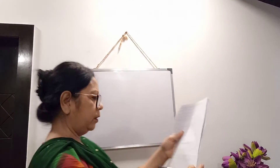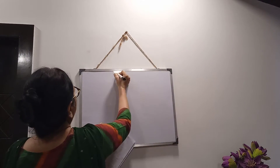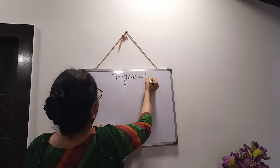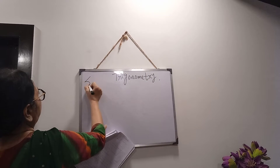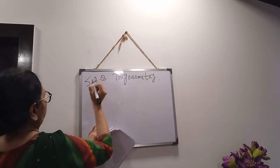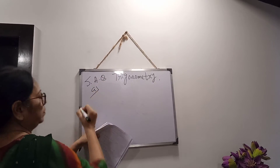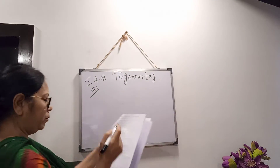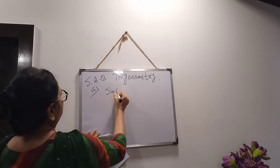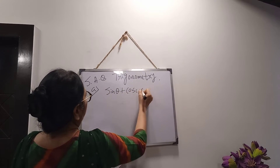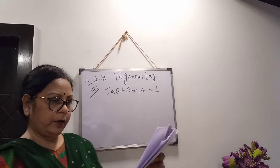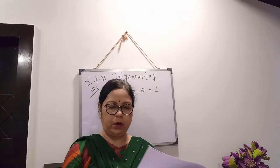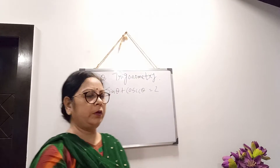Hello students. In this video you will get the SAQ part of trigonometry. Number 8: It is given that sin θ + cosec θ = 2. Then calculate the value of sin²⁰¹⁷θ + cosec²⁰¹⁷θ.